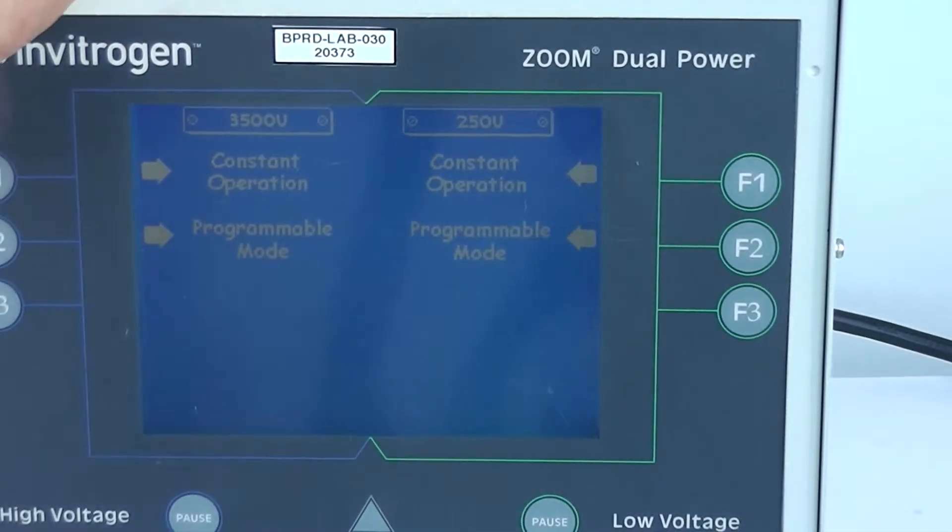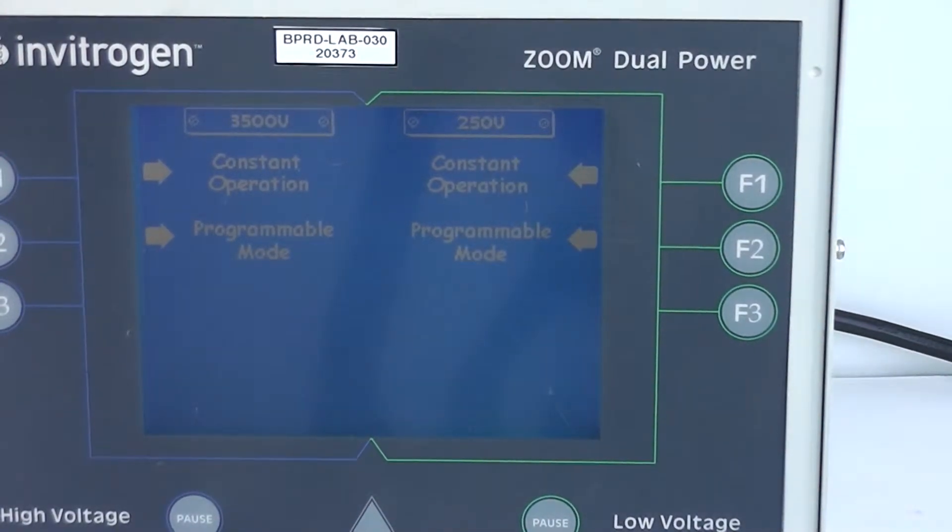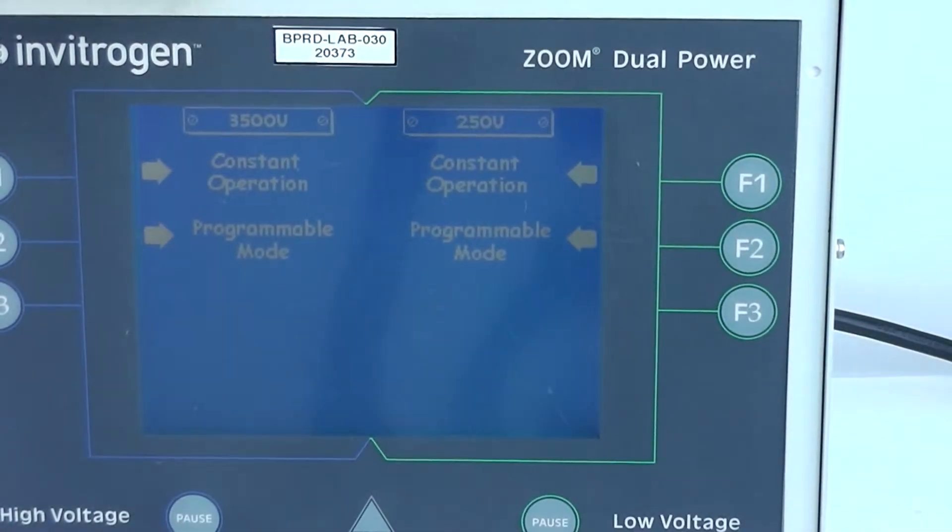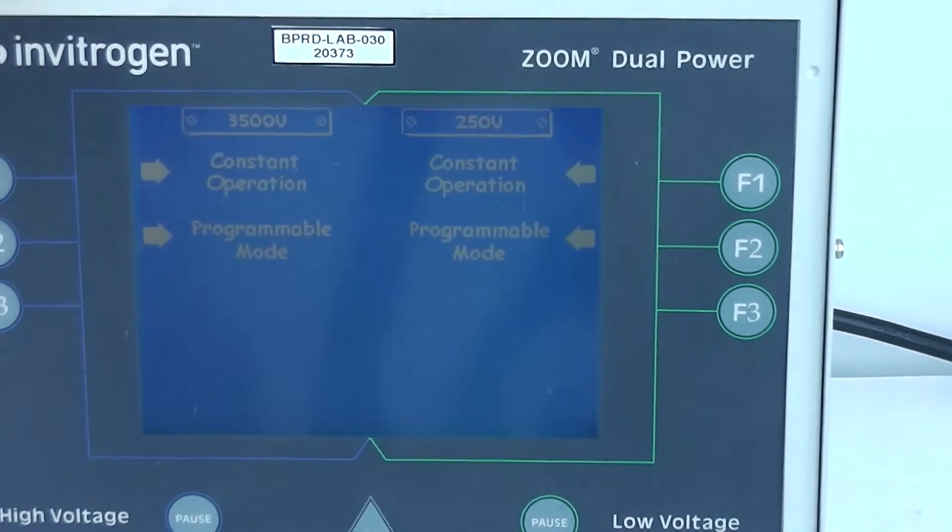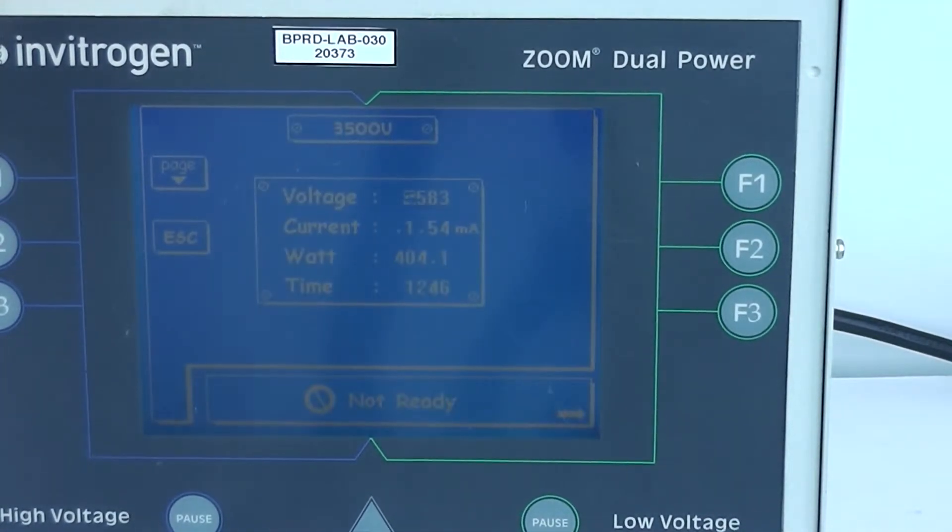Program it. Different modes. Here's the 350 side. The 3500 side and here's the 250 side. Put it on constant operation.